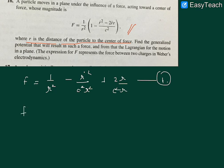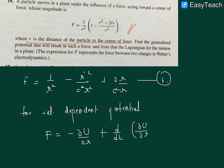Now for velocity-dependent potential, what we know is F equals minus dU by dr plus d by dt of dU by dr dot.